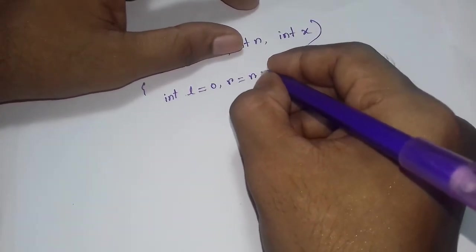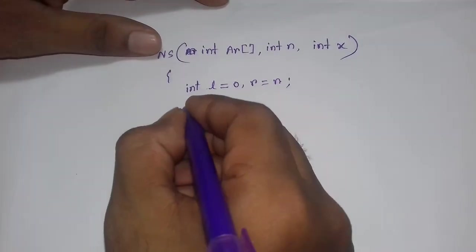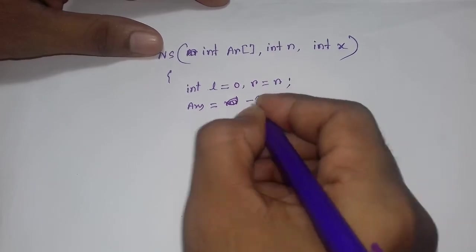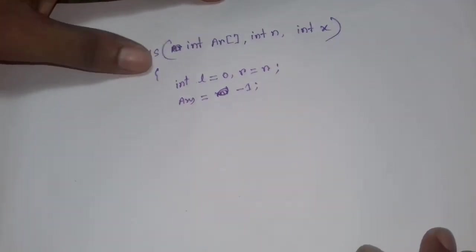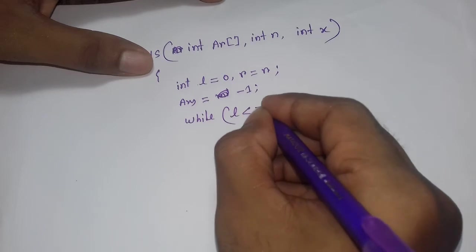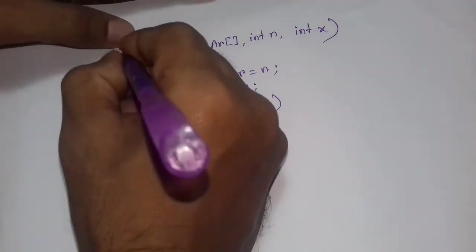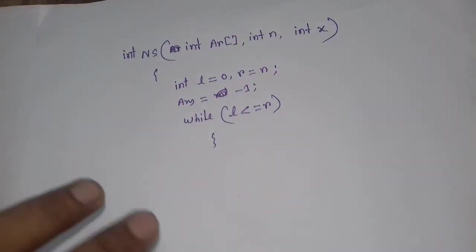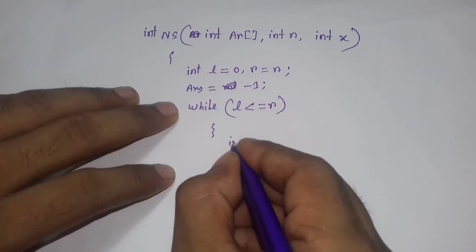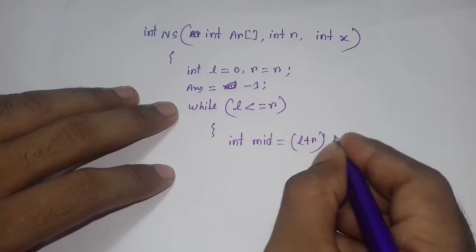Now let's code the solution. We initialize answer equal to minus 1. We set up a while loop with condition L less than or equal to R. Inside the loop, we compute mid equal to L plus R divided by 2.